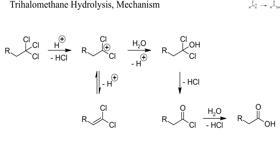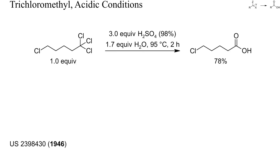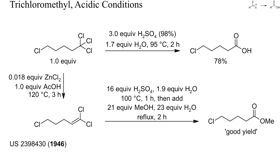Trihalomethanes have the same oxidation state as carboxylic acids and can be hydrolyzed by aqueous acids or bases. Trihalomethanes can be prepared by radical halogenation of methylarenes or by addition of trihalomethyl radicals to alkenes. Acid-catalyzed hydrolysis of trichloromethyl groups usually proceeds by the mechanism sketched here. Geminal dichloroethylenes are also synthetic equivalents of acids and can also be hydrolyzed. Acyl chlorides can be prepared if only one equivalent of water is used. Benzoyl chloride, for instance, is prepared on a large scale by partial hydrolysis of trichloromethylbenzene. In this example, the hydrolysis of a trichloromethylalkane succeeded by heating with sulfuric acid for two hours. It was also possible to first convert the trichloromethyl group into a dichloroalkene and then prepare a methyl ester directly by heating first with sulfuric acid and water and then with methanol.